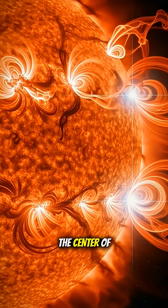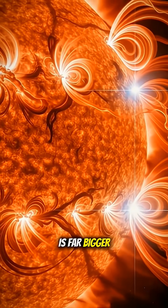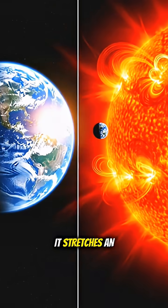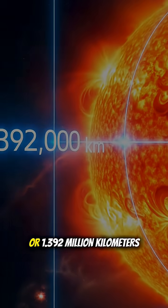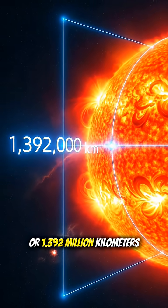The Sun, our giant star in the center of the solar system, is far bigger than most people imagine. It stretches an incredible 875,000 miles across, or 1,392,000 kilometers.